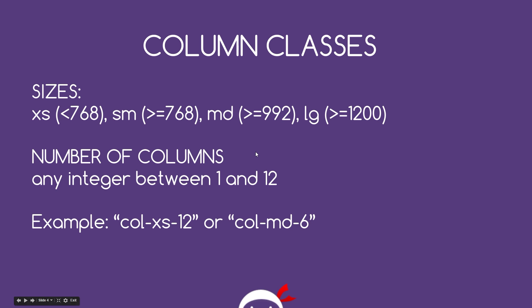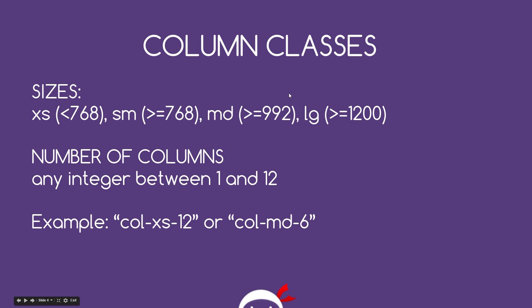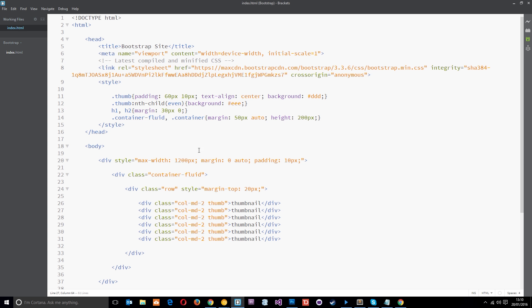The way to approach this is by thinking mobile-first and working upward. First, decide how wide you want elements at mobile and apply a class for it. Then look at small screens and decide how many columns wide you want elements to be there. Then medium screens, then finally large screens. That's the typical approach — going from small to large.